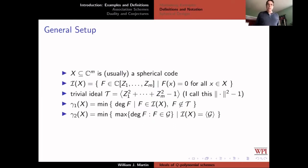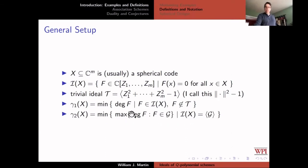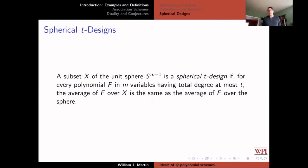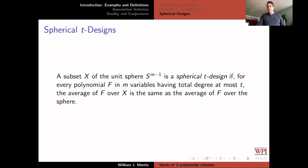Here's the general setup: X is usually a spherical code, the ideal is the set of all polynomials in m variables vanishing at each point of X, and the trivial ideal is generated by the equation of the sphere (sometimes abbreviated as norm-squared minus one). Gamma one is the smallest degree of a non-trivial polynomial in the ideal; gamma two is the smallest k such that the ideal can be generated by polynomials of degree at most k. A spherical t-design is a set of unit vectors such that for any polynomial of degree at most t, the average over the sphere equals the average over the set — the Riemann sum is exact for polynomials of degree up to t.